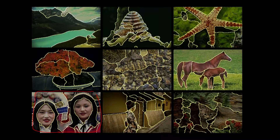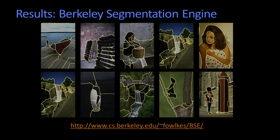By the way, you'll notice that there are more than two segments in these pictures. So how do you do that? Well, the simplest approach is you partition your graph, and then you partition it again and again, and you need a stopping criteria based upon the affinities of the links that you're cutting. Here are some more examples also taken from the Berkeley database for segmentation.